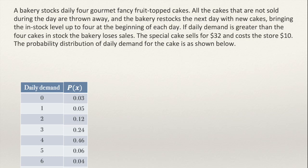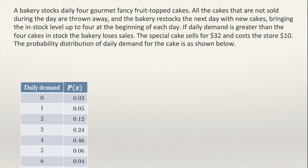In this video I will be explaining how to solve this problem about a discrete probability distribution. The problem says a bakery stocks daily four gourmet fancy fruit top cakes. All cakes that are not sold during the day are thrown away and the bakery restocks the next day with new cakes, bringing the stock level up to four at the beginning of each day. If daily demand is greater than four cakes in stock the bakery loses sales. The special cake sells for $32 and costs the store $10. The probability distribution of daily demand for the cake is as shown.